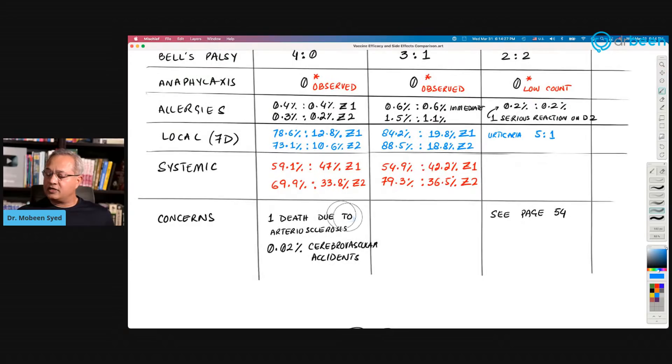The only one concern in the trial data that I saw was in case of Pfizer, that they had one death which had arteriosclerosis, although they came back and said this was not related to the vaccine.